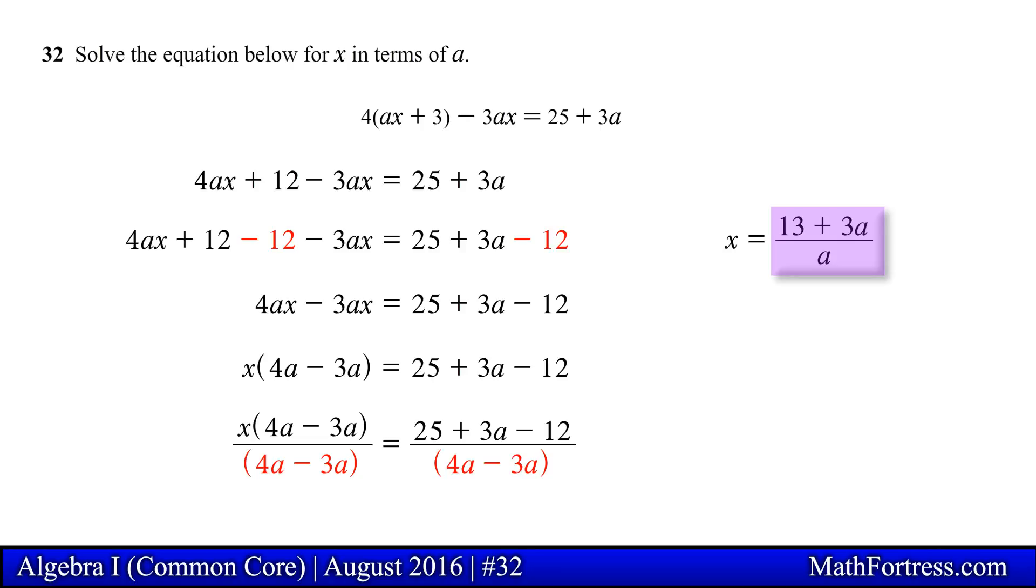We can also rewrite this expression by distributing A to each of the terms in the numerator. Doing that we obtain an alternative form of the answer. In this case 13 over A plus 3. Either expression is an acceptable answer. So this is our final answer.